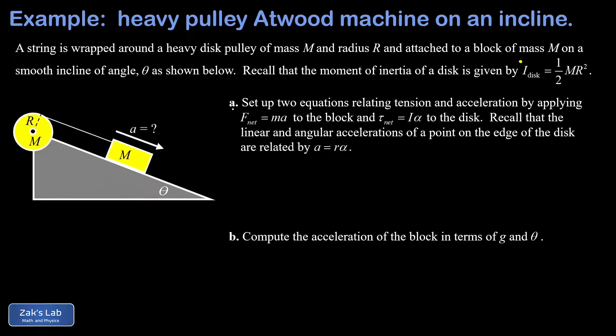In part a, we're told to set up two equations relating tension and acceleration by applying Newton's second law, F equals ma, to the block. For the purely rotating pulley, we're going to apply tau equals I alpha, the rotational equivalent of Newton's second law. We're also reminded that the relationship between linear and angular acceleration for a rotating object is a equals r alpha. Our goal here is to find the acceleration of this block as it slides down the ramp.